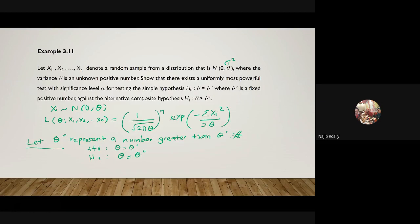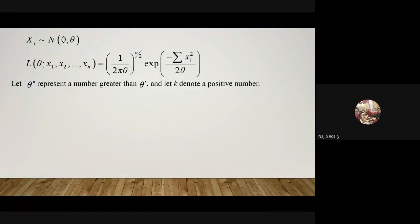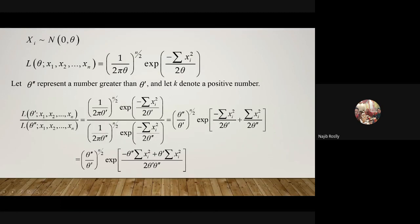We want to test H0: θ equals θ' versus the alternative θ greater than θ'. Let θ'' represent a number greater than θ', and let k denote a positive number. Applying the Neyman-Pearson theorem, we form the ratio L(θ') divided by L(θ''), constructing the likelihood function by replacing with θ' and θ'' respectively. Simplifying gives (θ'' over θ') to the power N/2, times exponential of negative summation xi squared times (1 over 2θ' minus 1 over 2θ'').